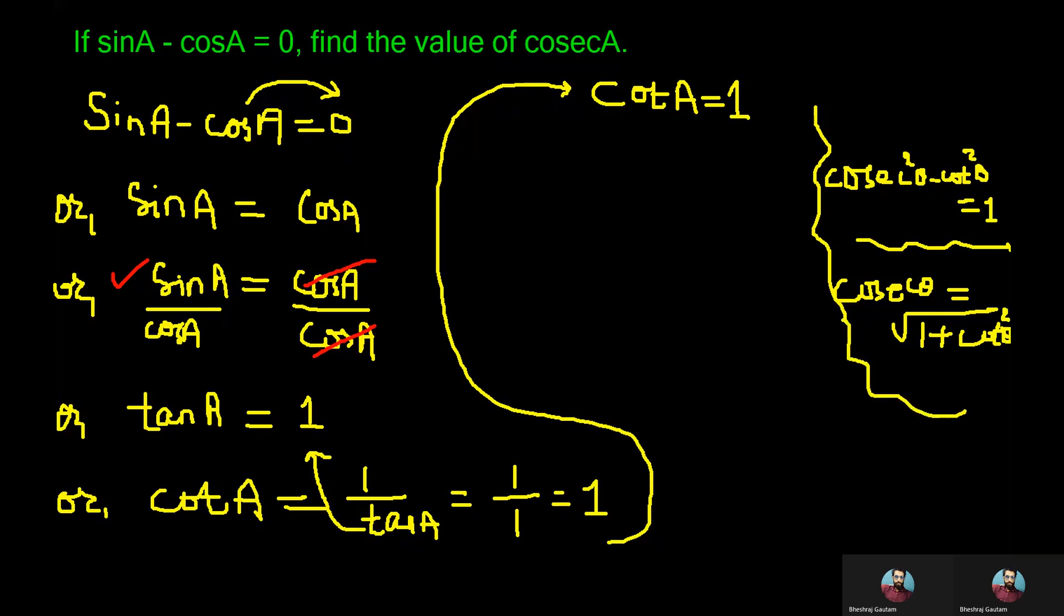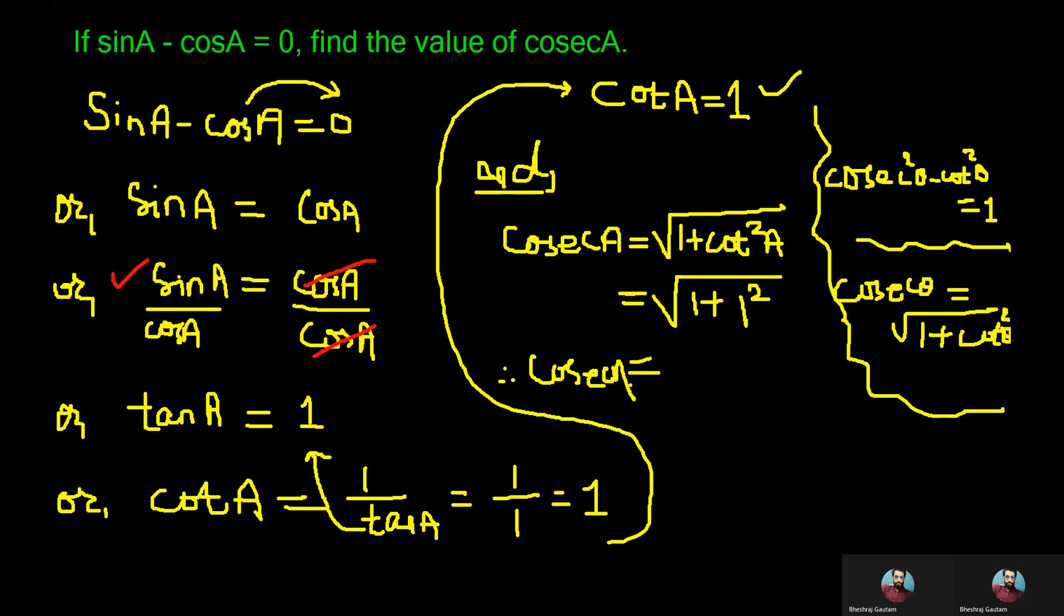So using the same relation we can write now cosecA is equal to root under 1 plus cot square A. As we have got cotA is equal to 1 in the above step and replacing the value for cotA inside the root we can write 1 square and which gives the final answer as cosecA is equal to 1 plus 1 is equal to root under 2.